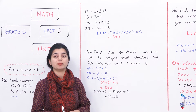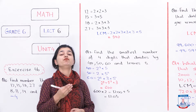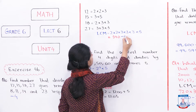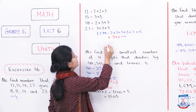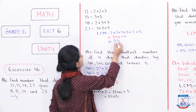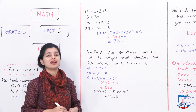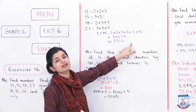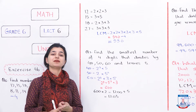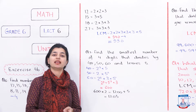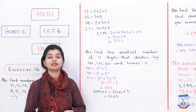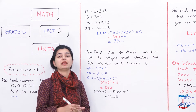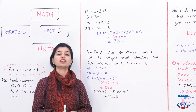The LCM of the 4 numbers is 540. But we need the number from which, when divided, you always get a remainder that is 4 less. For that, you simply subtract 4. So 540 minus 4 is 536. That is your answer. When you divide 536 by any of those numbers, you will get the respective remainder. So question number 6 is solved: prime factorization, then LCM, then subtract 4.